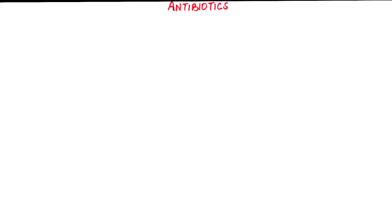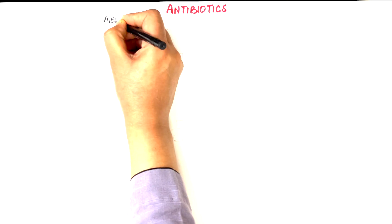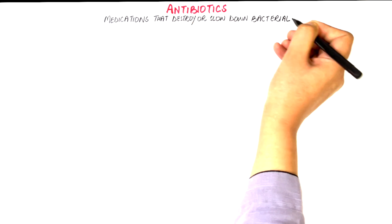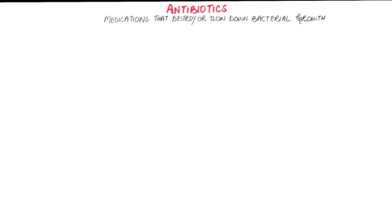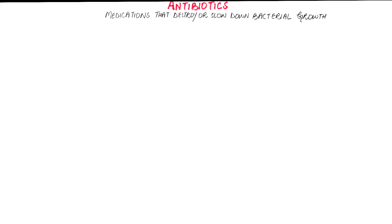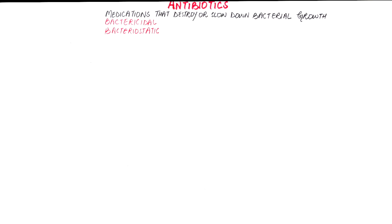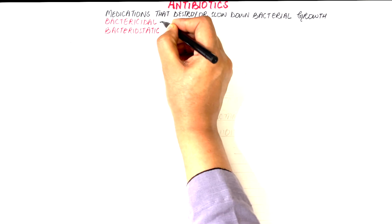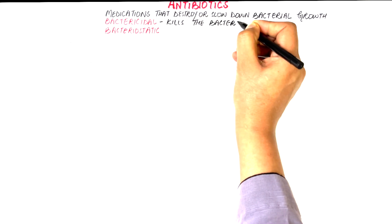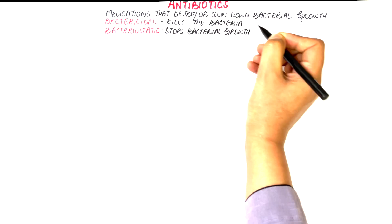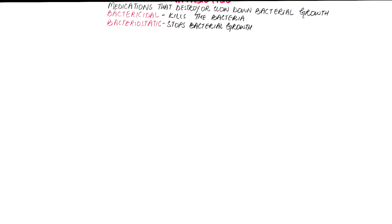Antibiotics are medications that destroy or slow down bacterial growth. Depending on these effects, an antibiotic can act as a bactericidal or a bacteriostatic agent. While a bactericidal antibiotic kills the bacteria, a bacteriostatic antibiotic stops bacterial growth.